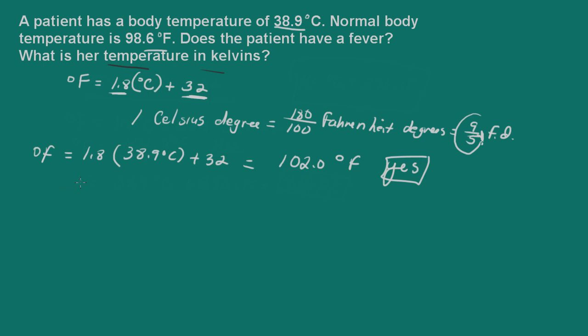So we can write a formula here for Kelvin, that is the degree Celsius, whatever the temperature is in degrees Celsius, plus 273.15. So for this problem, we have 38.9 degrees Celsius plus 273.15, and that is going to give us 312.1 Kelvins.